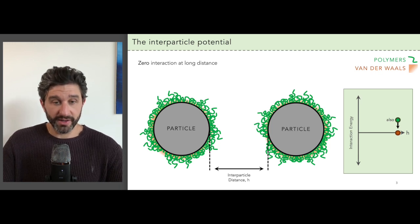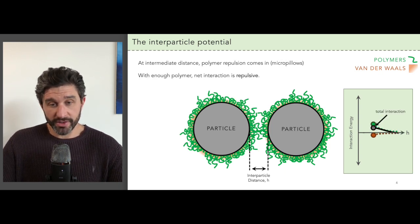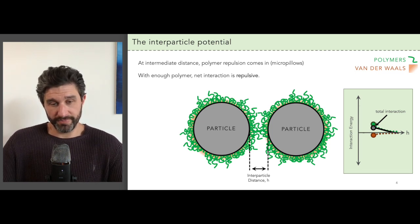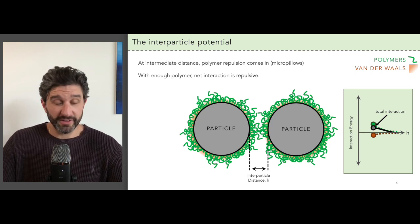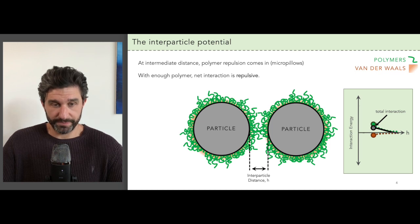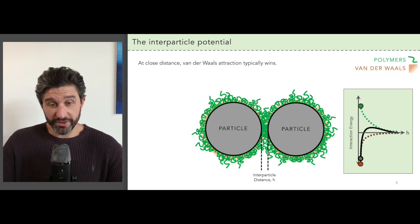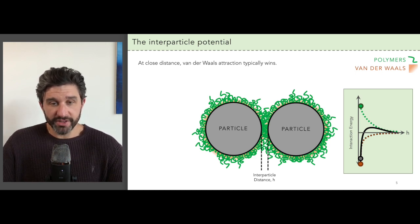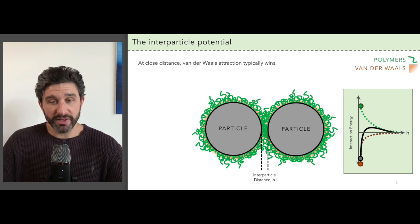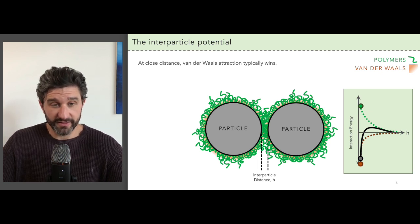When the particles are really far apart, there's zero interaction between them — that's the reference point. If we bring the particles a bit closer together, we engage the polymer micropillows. It's repulsive and so the value of the potential goes up. The van der Waals attraction is still very small at this point as it's primarily short-ranged, so the total interparticle potential is positive. If we bring the particles really close together, the polymer repulsion gets larger because there's more micropillowing, but the van der Waals is even stronger. It is attractive, meaning a negative value for the potential, and it normally wins out over the polymer repulsion at this very close distance, so the total interparticle potential is negative.